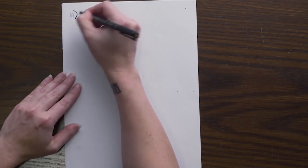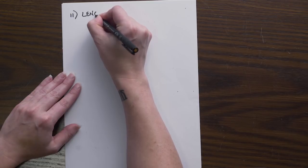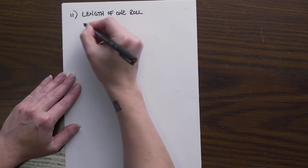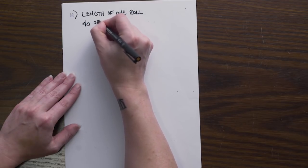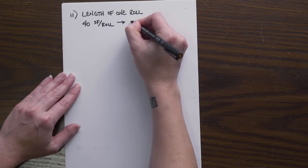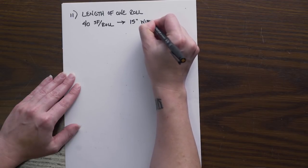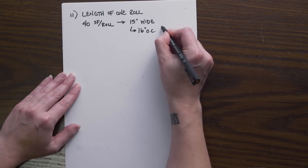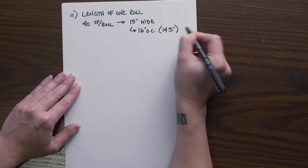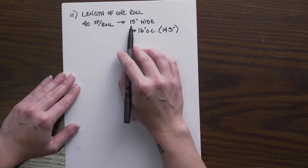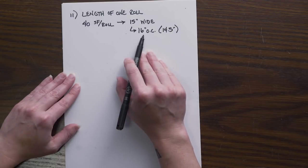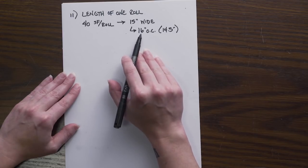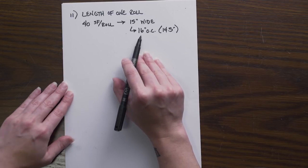To do that we need to determine the length of one roll of insulation. Per the specs we are told that it is 40 square feet per roll and that each roll is 15 inches wide. Remember if we are using a 16 inch on center spacing, the actual cavity is going to be 14.5 inches in width, so that is why it's standard for a 15 inch insulation when we have 16 inch on center. It would typically be a 23 inch insulation when we are doing two foot on center. You want to make sure that you buy the appropriate size for what you are framing.